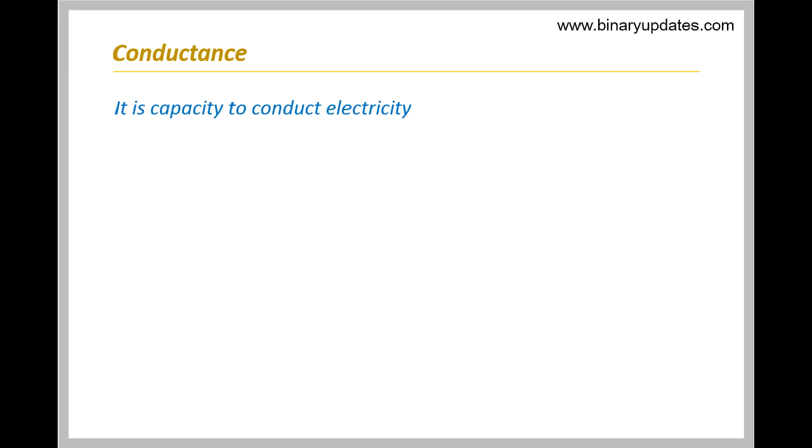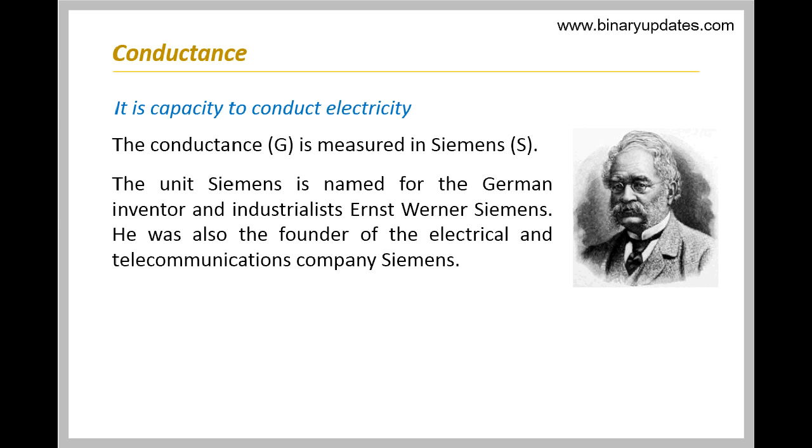It is simply a capacity to conduct electricity. Conductance is denoted as letter G and measured in Siemens denoted as letter S. The unit Siemens is named for the German inventor and industrialist Ernst Werner Siemens. He was also the founder of the electrical and telecommunications company Siemens.